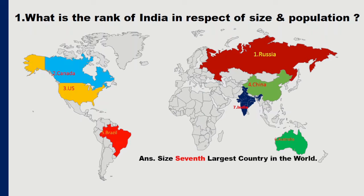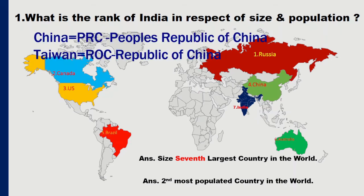What is the rank of India in respect of population? Population-wise, the largest country in the world is China, and our India is ranked second population-wise. Russia shares borders with the most countries in the world. China is second, sharing borders with 14 countries. China's official name is not China — the official name is PRC, People's Republic of China. And Taiwan's official name is ROC, Republic of China.